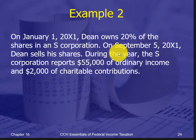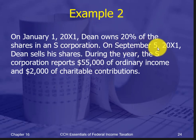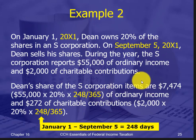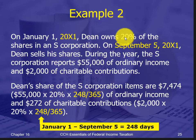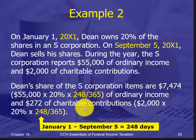Now a 20% shareholder situation where they sell their shares on September 5th — so they don't own the stock all year. You take $55,000 times 20%, times the number of days owned divided by 365. The same calculation applies to the charitable contributions. Literally, you do it on a per day, pro rata basis with an S-Corporation.